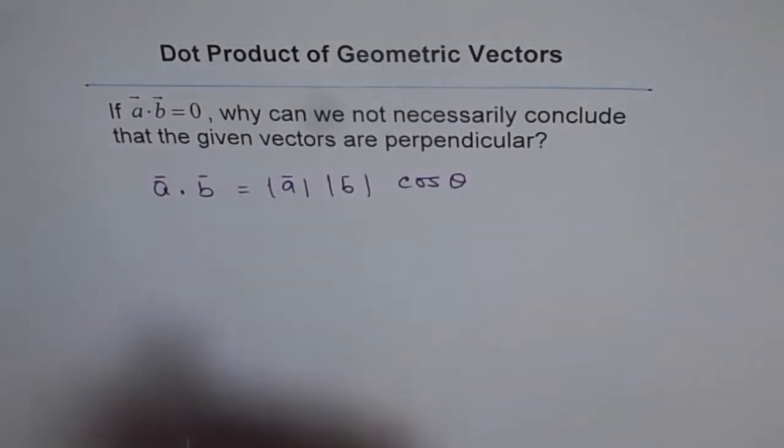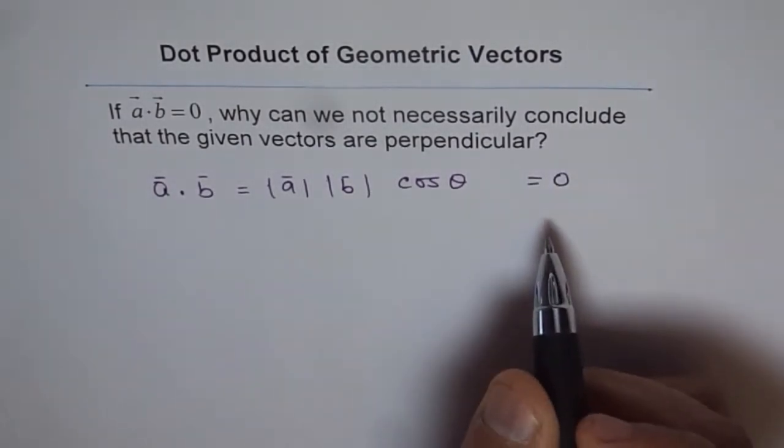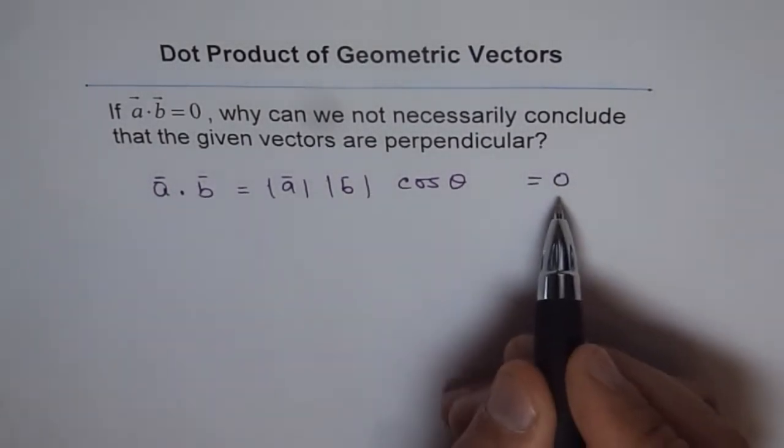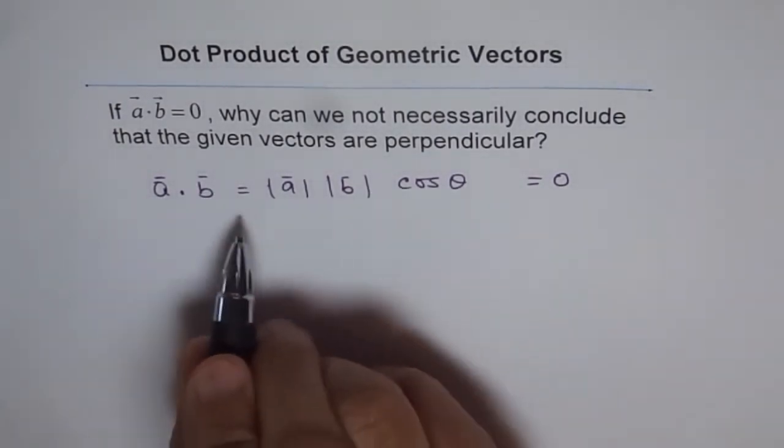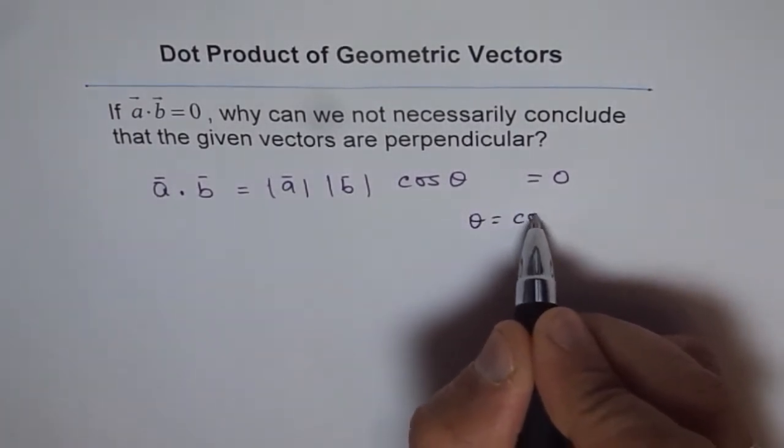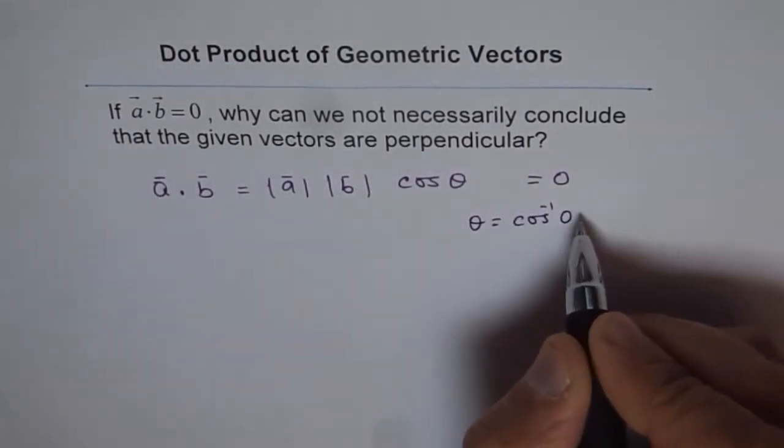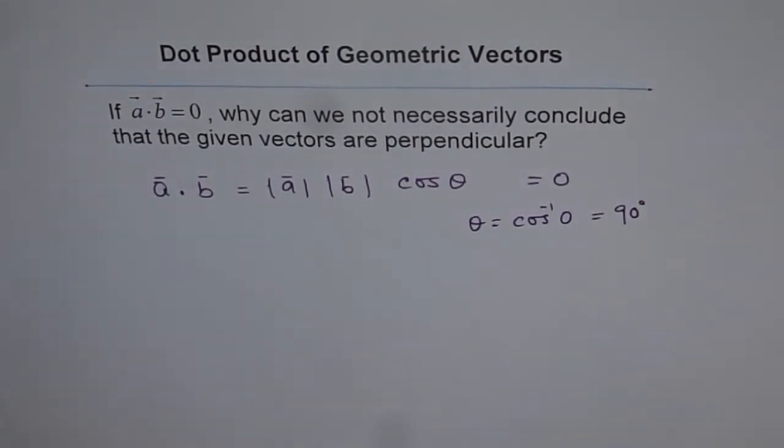So it says if this is equal to 0, that means that the vectors are perpendicular, that means theta should be equals to, if you do this, then from here theta will be equals to cos inverse of 0, so that is 90 degrees. So now look at the question once again.